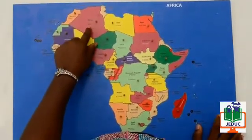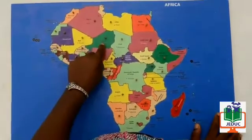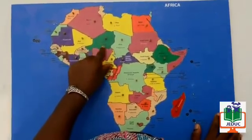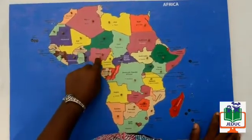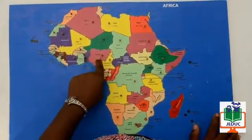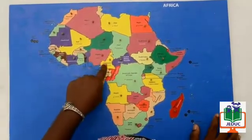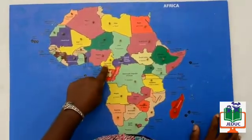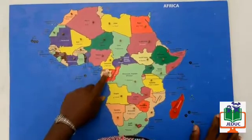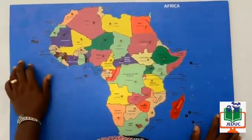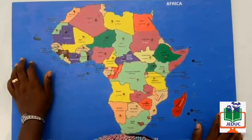Niger, capital Niamey. Nigeria, capital Abuja. Cameroon, capital Yaoundé. Do this for all the countries on the map.